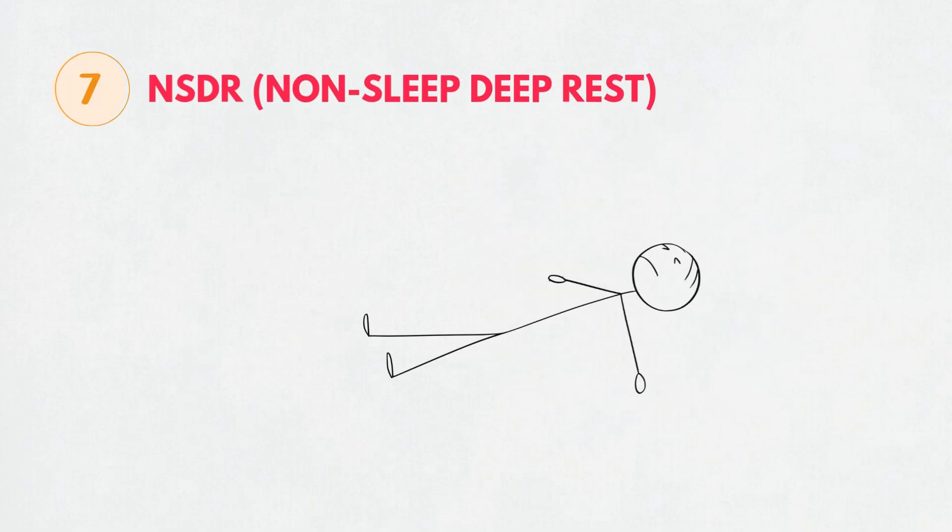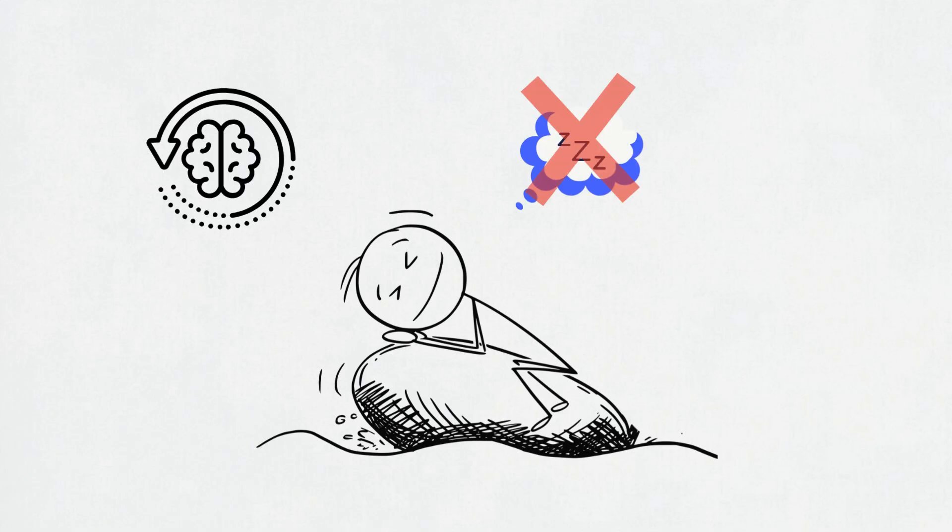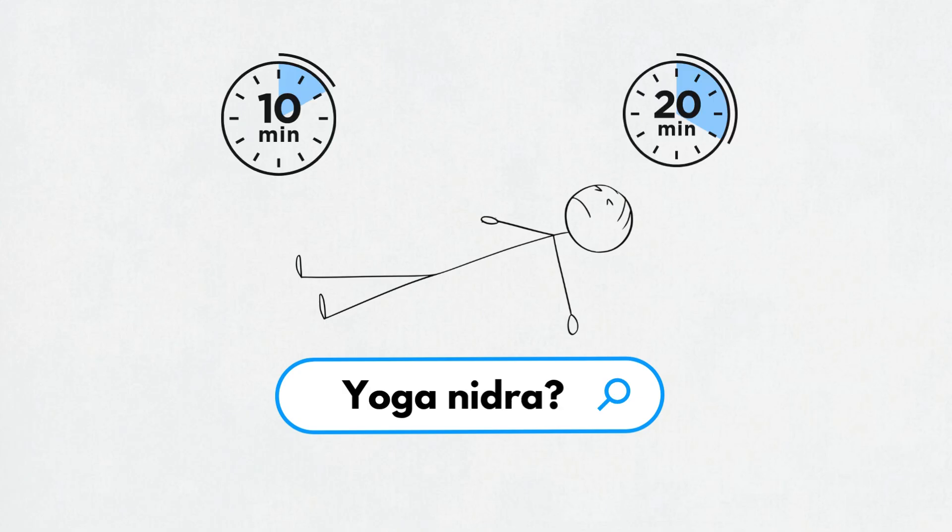Seventh, NSDR or non-sleep deep rest. NSDR is a legal nap for adults. It's not sleep, but it resets your brain. Look up Yoga Nidra in Google. 10 to 20 minutes does wonders without nap guilt.